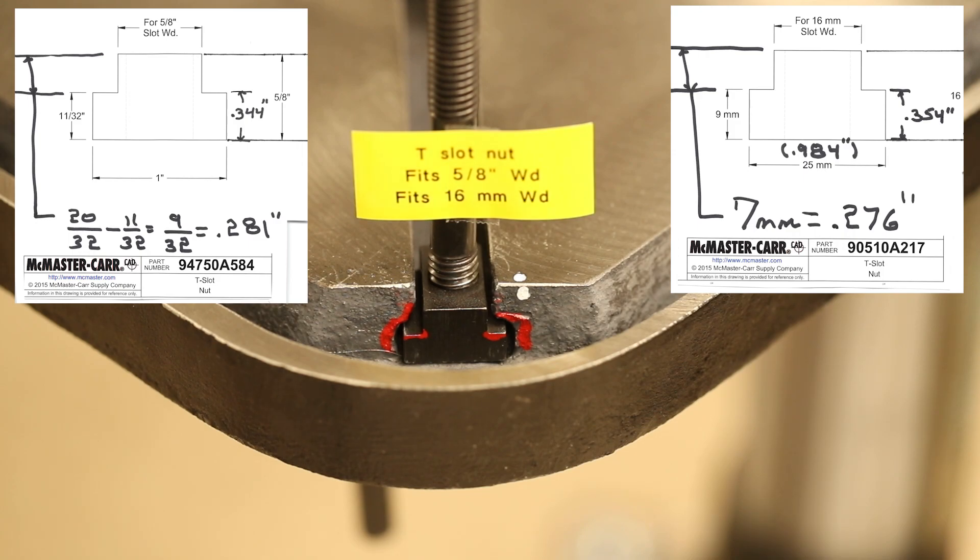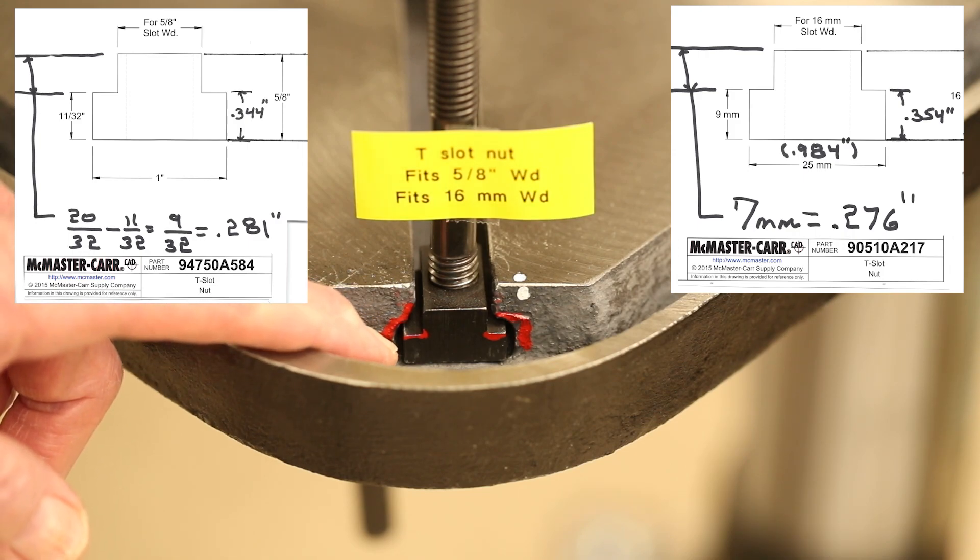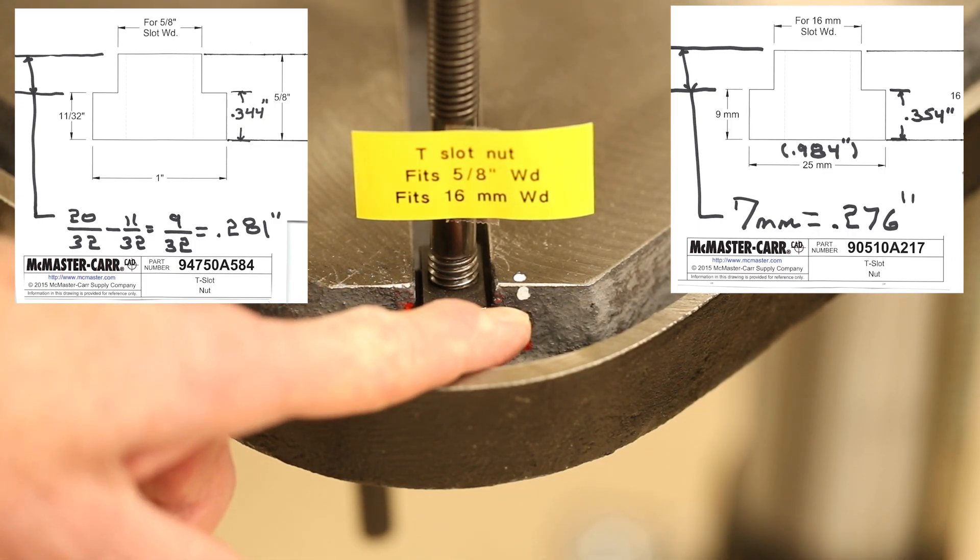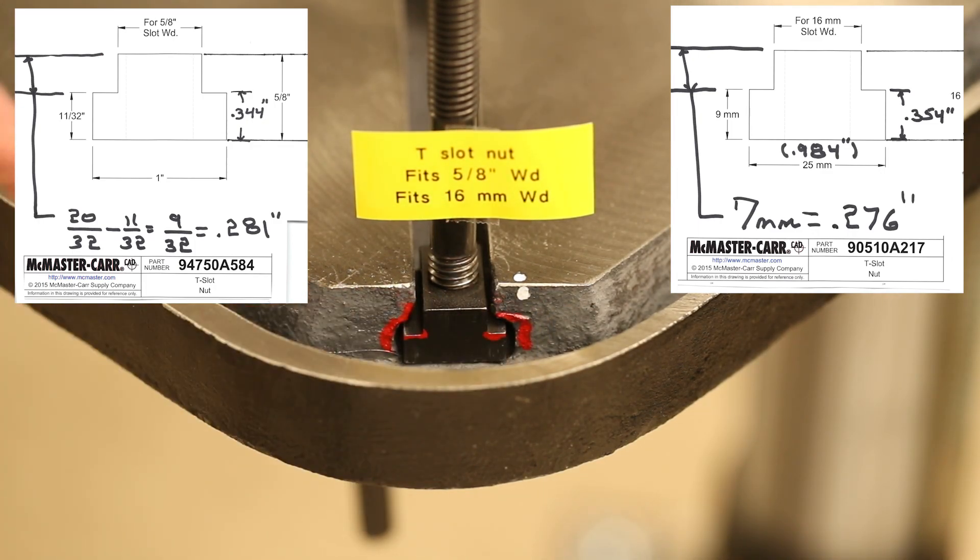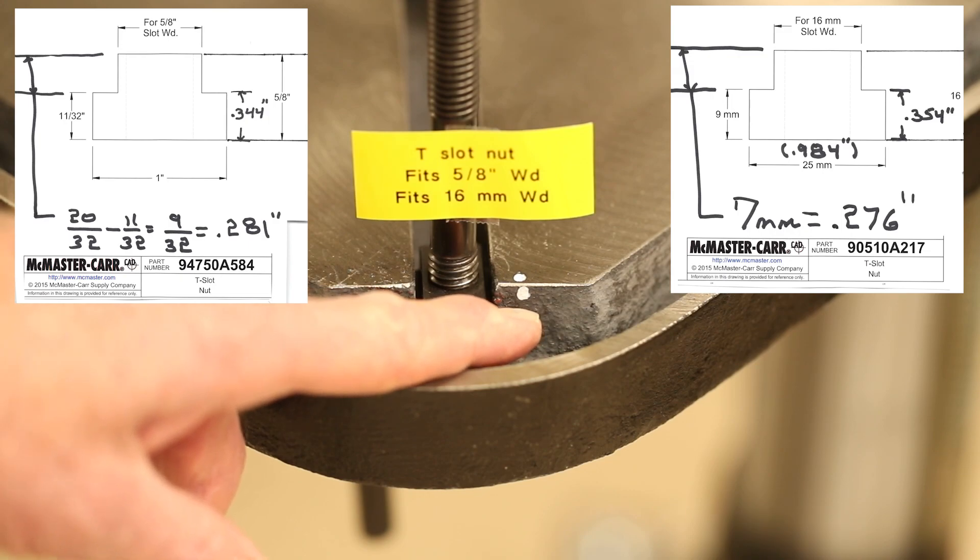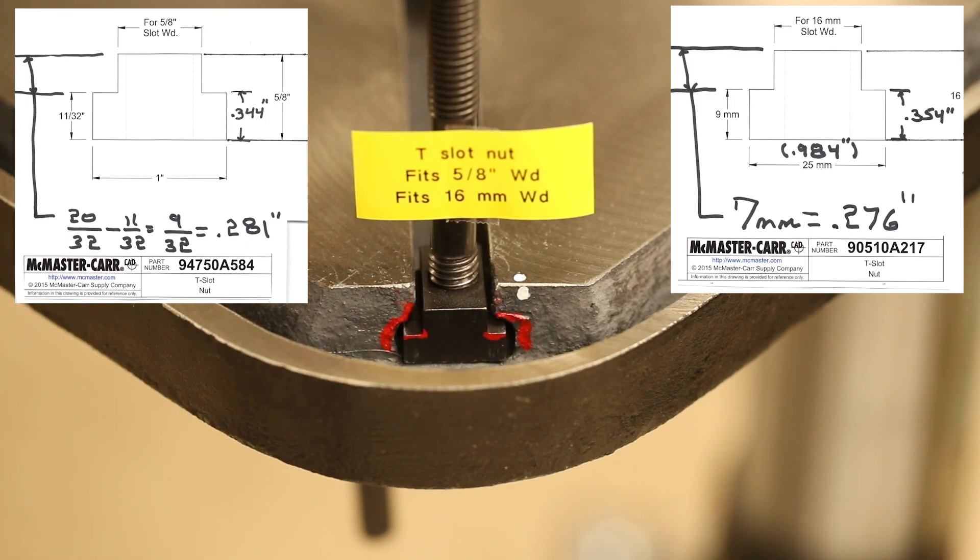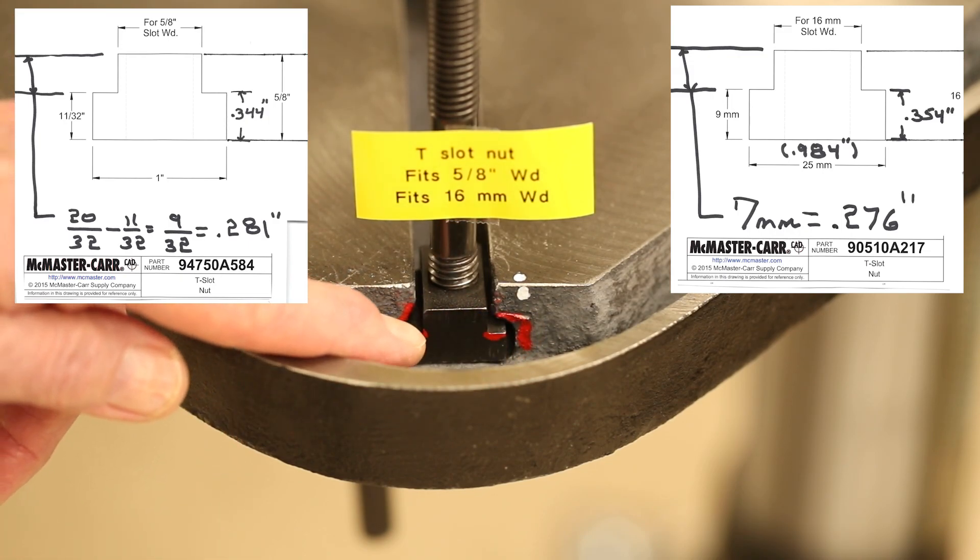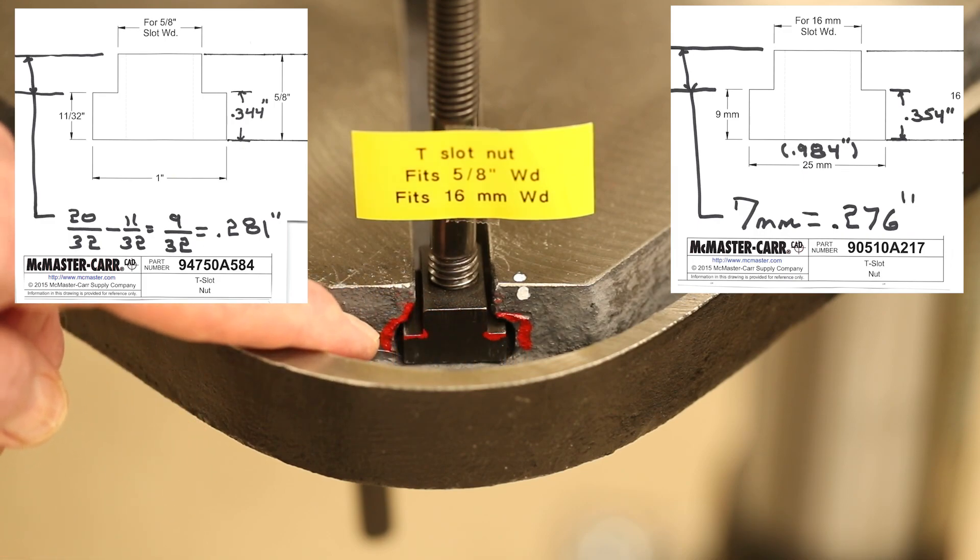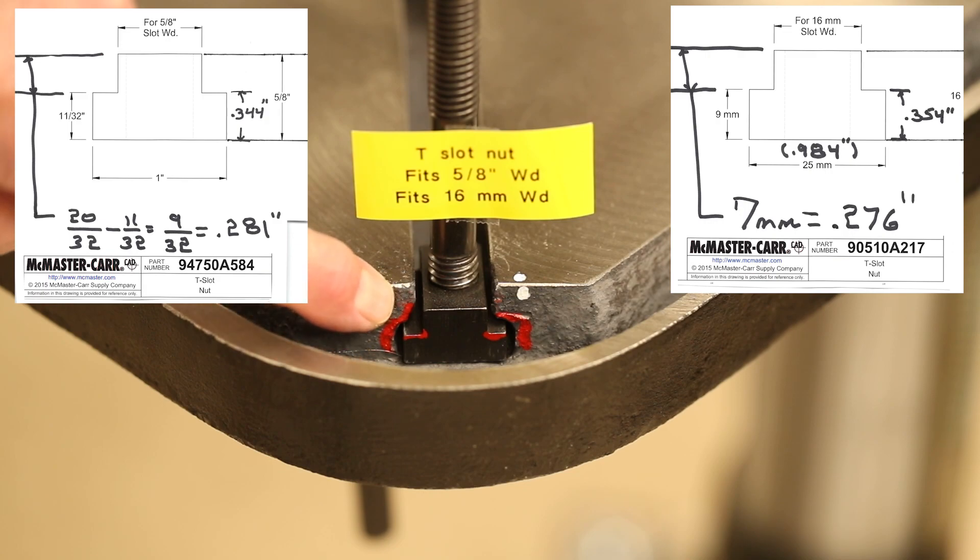You're looking at one of the T-slot nuts with stud attached on the slot I've identified as number one with the one dot. You can see that the well-defined shape of the T-slot nut is not at all conforming to the irregular non-machined shape of the T-slot in the table.